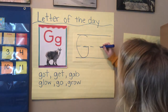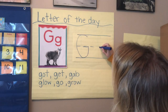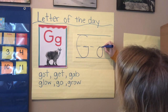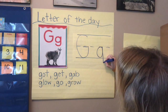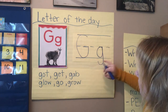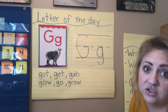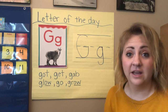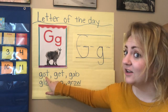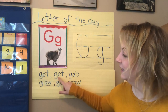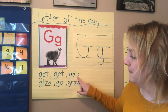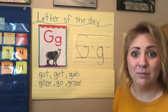Our lowercase G — we start on the middle line. We do a little circle to the bottom, and then we're going to take our marker and go all the way below that bottom line. So we started in the middle and then we went below our bottom line for that lowercase G. Now that we wrote our letters, we're going to go ahead and read some words. G-O-T — got. G-E-T — get. G-A-B — gab. To gab means to talk.